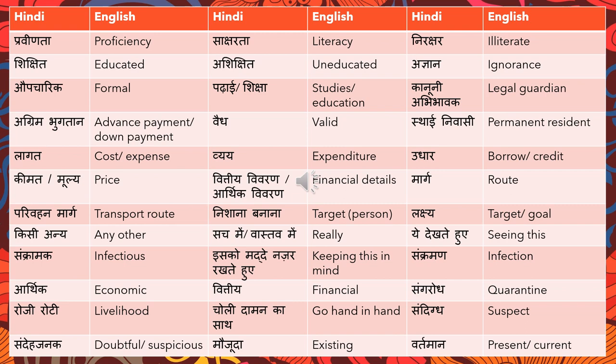'Agrim bhugtaan' means advanced payment, or in the context of cars or home loans, it can also be translated as down payment. 'Vaidh' means valid — for example, 'Is your passport valid?' is 'Kya aapka passport vaidh hai?' 'Sthayi niwasi' means permanent resident. 'Lagat' means cost or expense — it can also be translated as 'kharcha' depending on context. 'Udhaar' means to borrow or to take credit — 'Maine unse udhaar liya hai.'